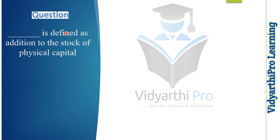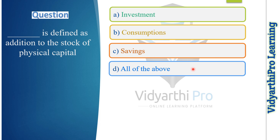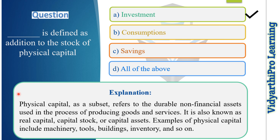Our next question is a fill-in-the-blank type: which of the following can be defined as an addition to the stock of physical capital? Options: investment, consumption, savings, or all of the above. The correct answer is option one, investment. Physical capital refers to durable non-financial assets used in producing goods and services — also known as real capital or capital stock. Examples include machinery, tools, and buildings.